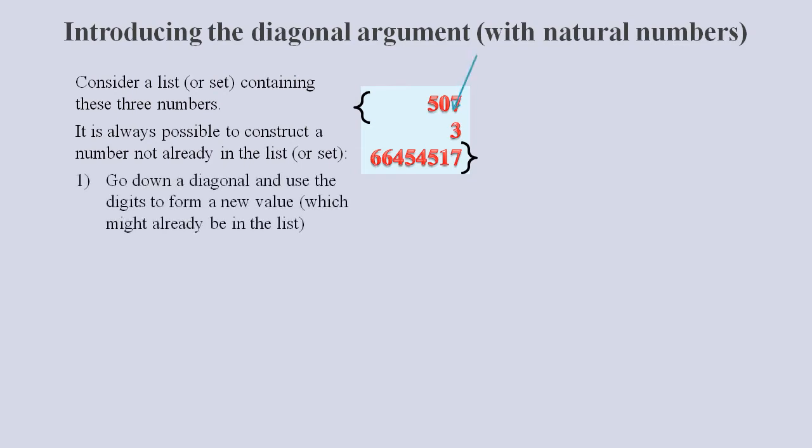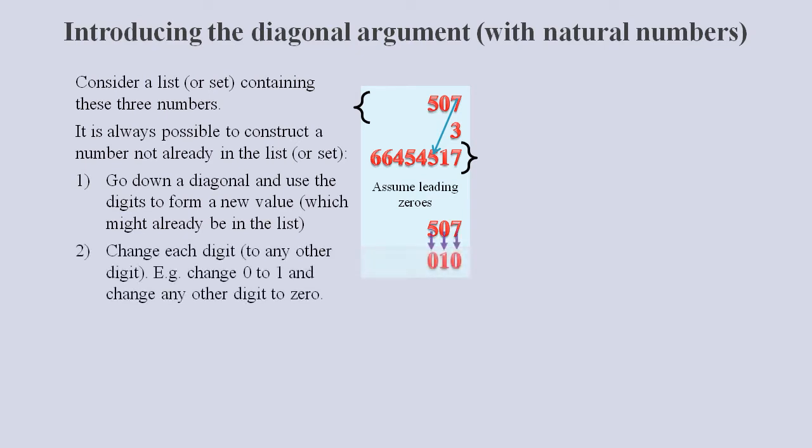First we go down a diagonal and use the digits to form a new value. For our units column we will take the units digit from the first number. Then we get our tens digit from the next number and so on. We can assume as many leading zeros as we need. It doesn't matter if the new value is already in the list. Because the next step is to change each digit in the new number. We could change any zero to one and change any digit that's not a zero to be a zero. This method of changing each digit in a diagonal will always generate a number not already in a list for any sized list.